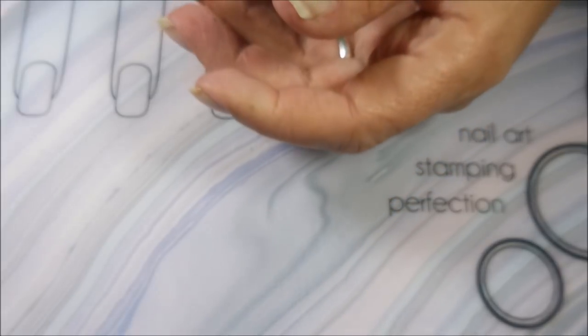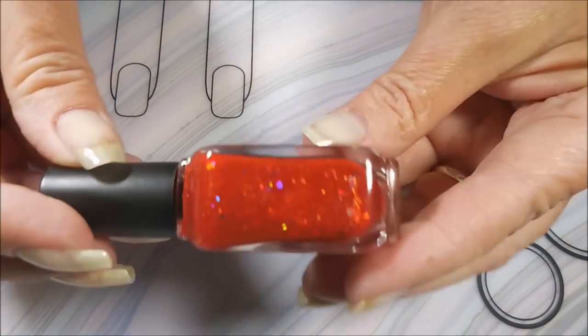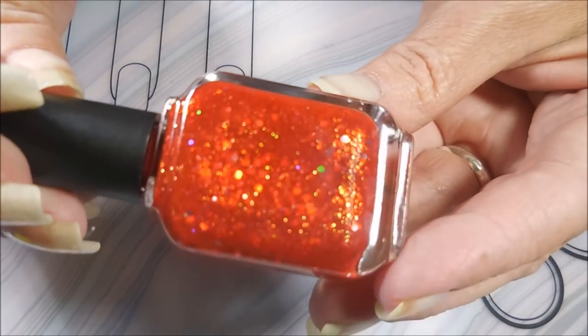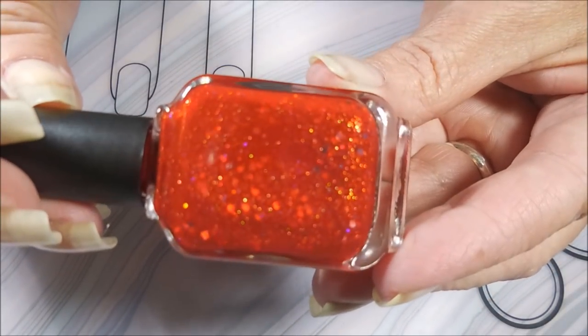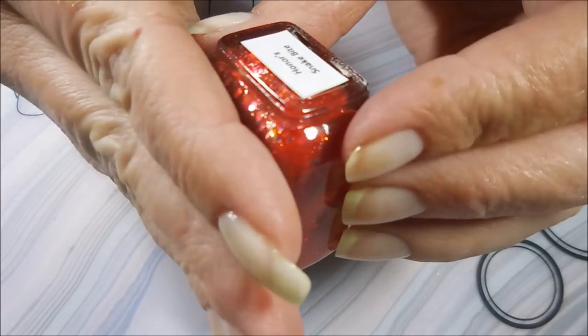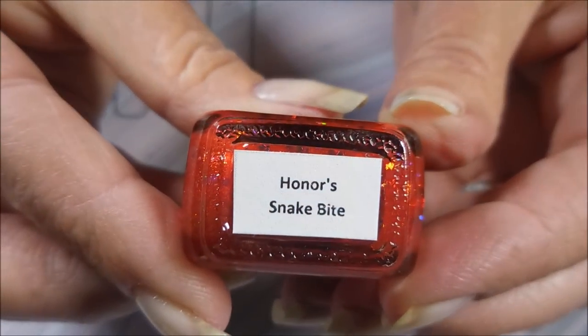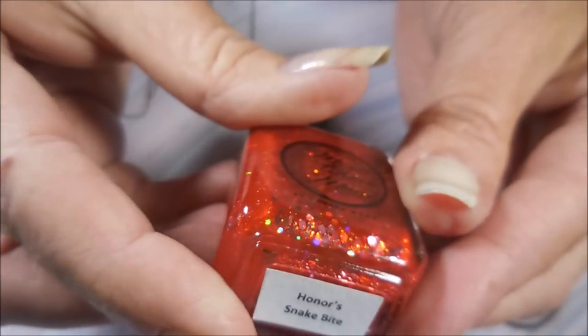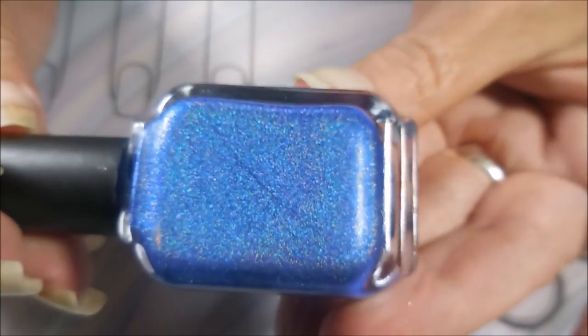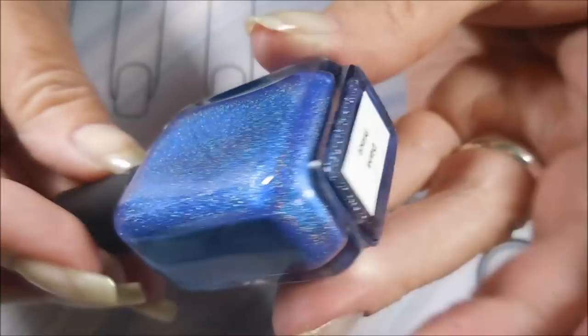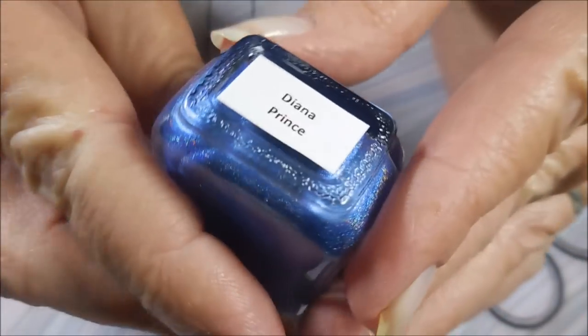It was a set of five and I'm going to start with this insane red right here. Just insane and this one's called Honor's Snakebite. Honor is her daughter and we love getting honor polishes. And then the next one is this crazy blue holo, gorgeous, and this is Diana Prince.